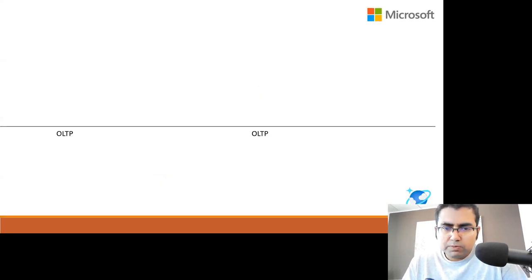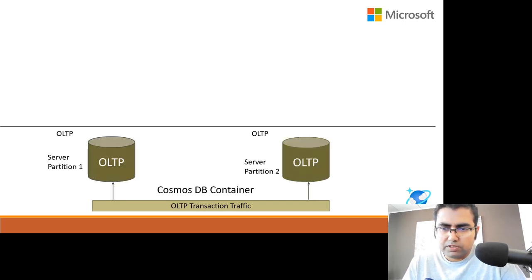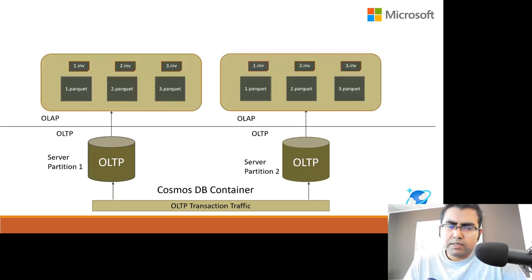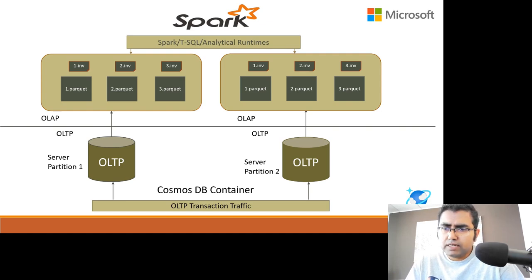To summarize the big picture: we have OLTP transaction traffic coming to Cosmos DB's shards via a sharded system. Each shard maintains its own analytical storage footprint in a decoupled storage medium. Any analytical runtime like Spark or T-SQL talks only to the decoupled storage, containing IOs and everything to just that medium, and is able to serve analytical queries without touching the OLTP path.